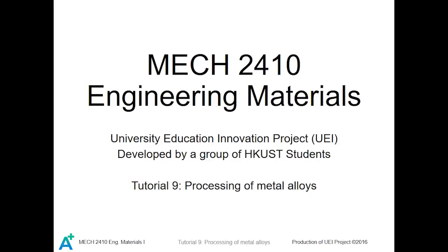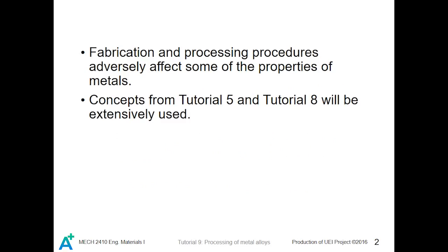Welcome to 410 Engineer Materials Tutorial 9: Processing of Metal Alloys. As engineers, we must know how to fabricate and process materials, especially metals and alloys, to form objects in order to make machines. Fabrication and processing procedures are a key point of interest, and they can adversely affect some of the properties of metals and alloys. Concepts from Tutorial 5 and Tutorial 8 will be extensively used.